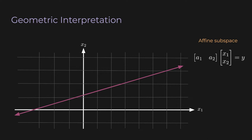For this pink line, neither of those properties are true. If we consider a point on this pink line, the vector starts at the origin and goes to that point. There's no vector that will lie perfectly on the line, so if we scale that vector, the tip won't end up on the line — it will extend further. Similarly, adding two vectors on the line won't generally produce another vector on the line. So this is pretty different from the subspaces we talked about before. This is an affine subspace.